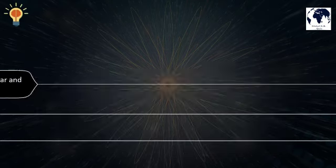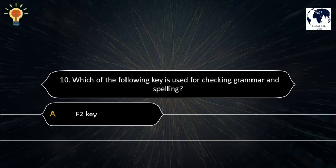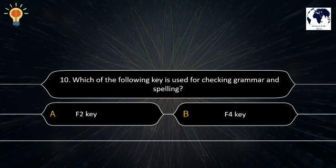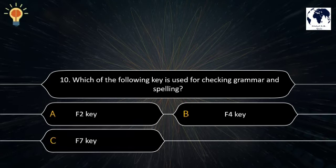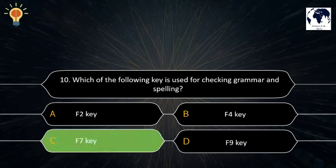Question number 10. Which of the following keys is used for checking grammar and spelling? Option A: F2 key. Option B: F4 key. Option C: F7 key. Option D: F9 key. The correct answer is Option C — F7 key.